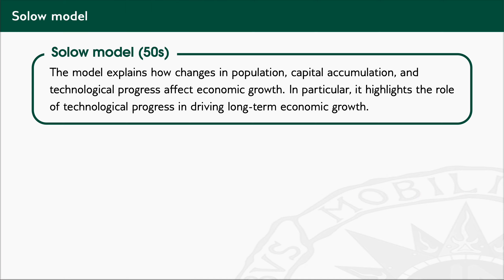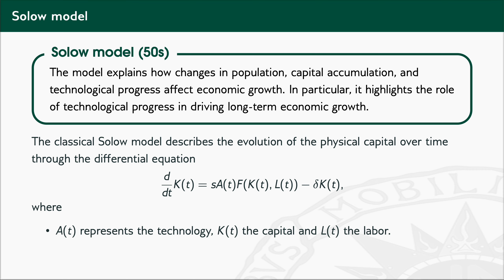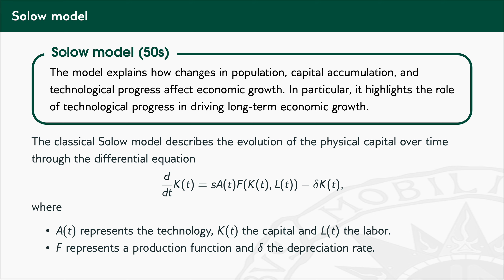The Solow or Solow-Swan model is a model from the 1950s which explains how changes in population, capital accumulation, and technological progress affect economic growth. It highlights the role of technological progress in driving long-term economic growth. The classical Solow-Swan model describes the evolution of physical capital over time through a differential equation, where A(t) represents technology, K represents capital, L represents labor, F is a production function, delta is the depreciation rate, and S is the saving fraction of output.